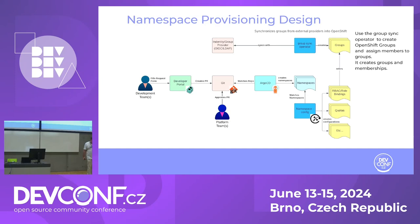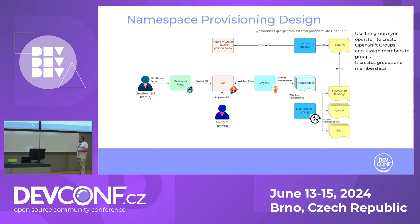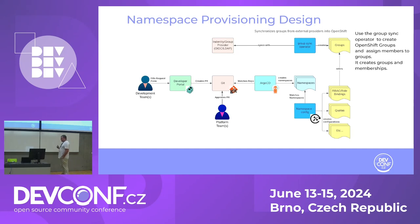Now let's look at the namespace provisioning process. A developer or deployment team fills in some form, a PR gets created, it is approved by the platform team persona, and then ArgoCD applies those changes from Git. We then have a namespace configuration operator that watches labels, annotations, and properties from the namespace and makes configuration based on the labels it finds. Once configured, it invokes external systems — for example LDAP — and the group sync operator ensures that the users and roles defined there are mapped to the group correctly.